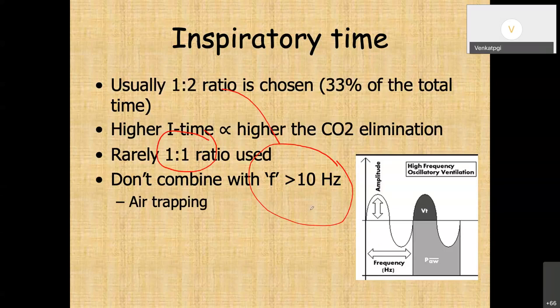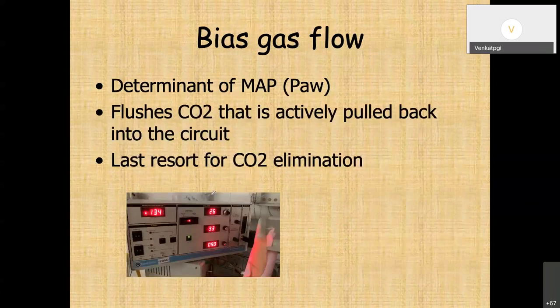A higher frequency combined with a 1:1 I:E ratio would significantly shorten expiration time and can cause air trapping. Bias gas flow is another last-resort method to modify CO2 elimination — higher bias flow leads to higher CO2 elimination — but frequency and bias flow modifications are generally the last parameters to adjust; amplitude modification is the primary approach for CO2 removal.